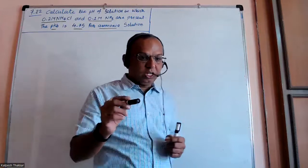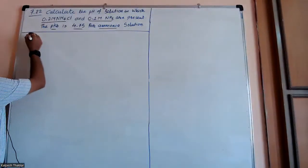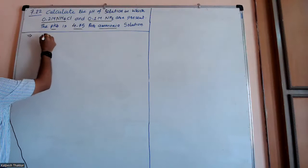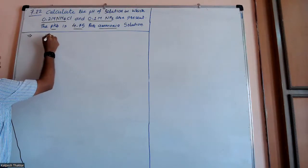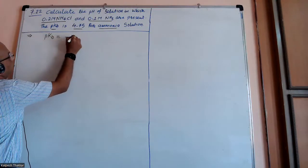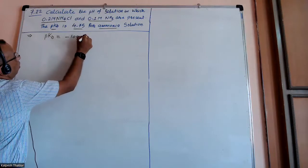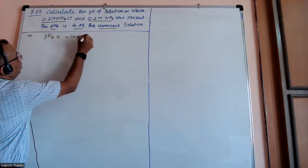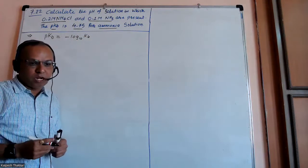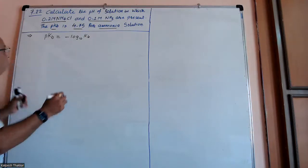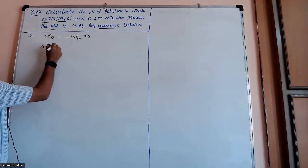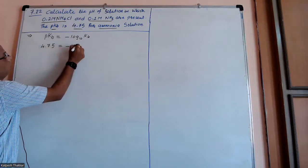Let's start step number one. The pKb is given, and as you know, pKb is equal to minus log of KB. This is the formula similar to the pH formula. So the pKb value is given as 4.75.